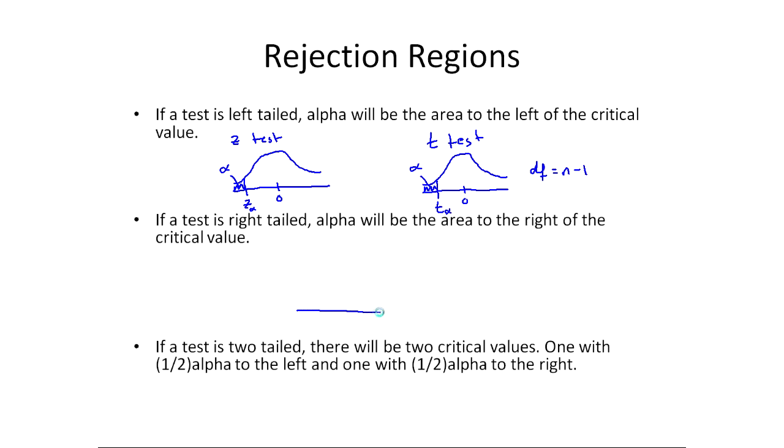For a right-tailed test, you'll draw your distribution, it'll either be a t or a z, and then you're going to say my alpha goes on the right-hand side. Then you're going to determine which t alpha or z alpha would be your cutoff here. We'll have our test statistic, and we'll see where it ends up on this picture.